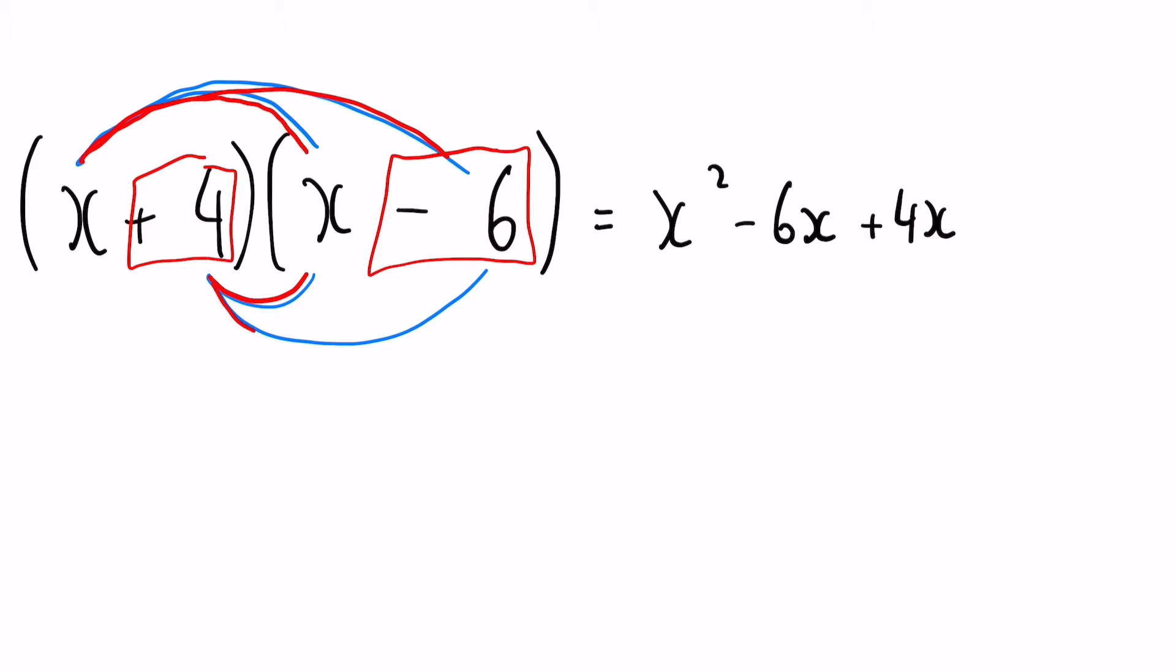Again, we have a positive four multiplied by an X, and that is going to be a plus four X. Finally, a positive four multiplied by a negative six. Again, we have a positive and a negative, so our answer is going to be a negative. Four times six gives us 24.